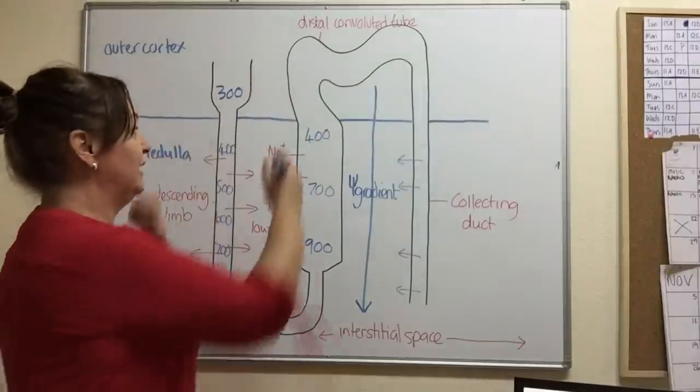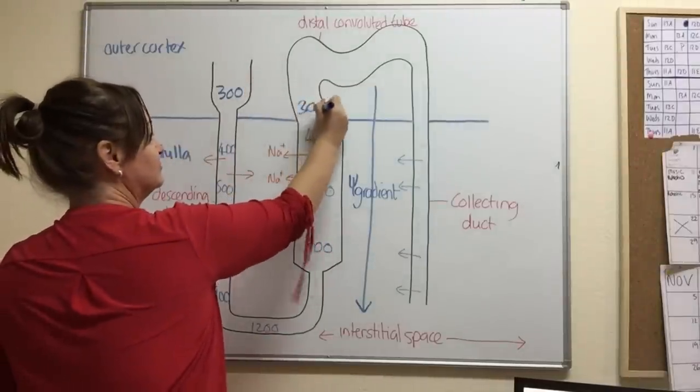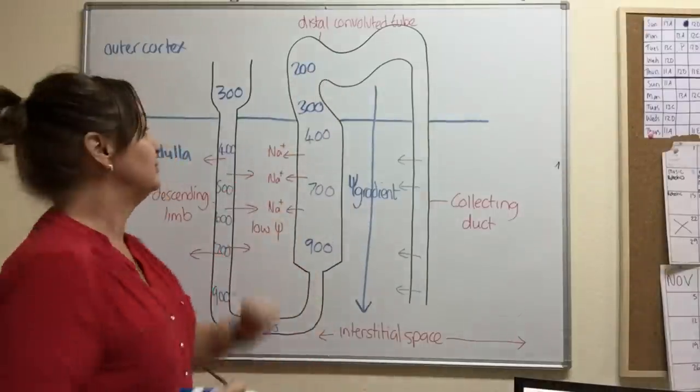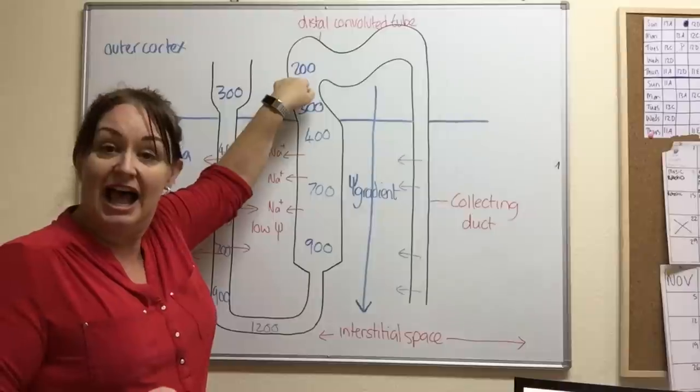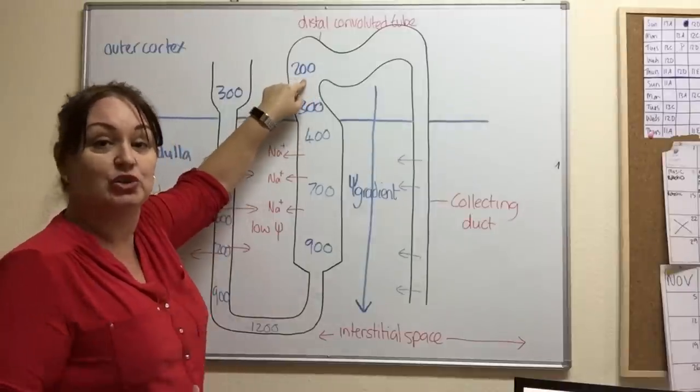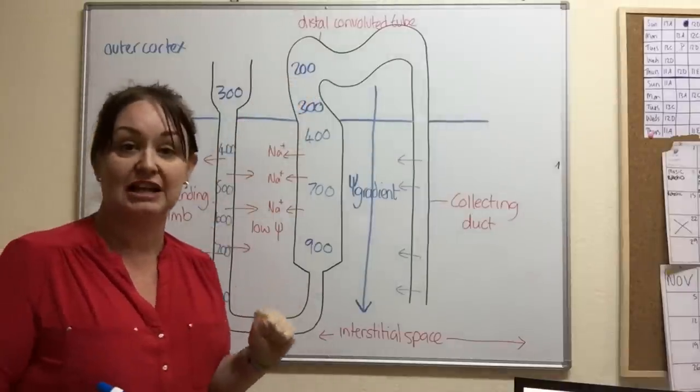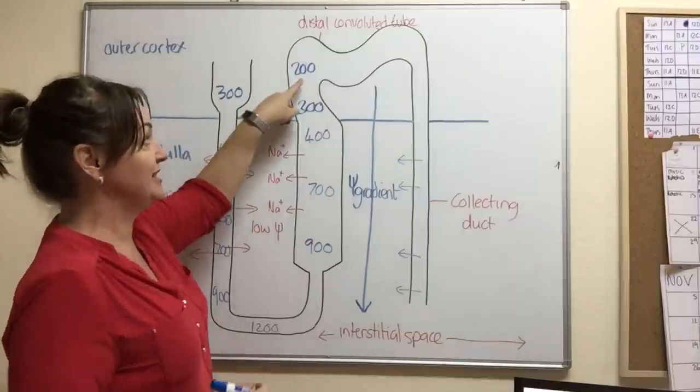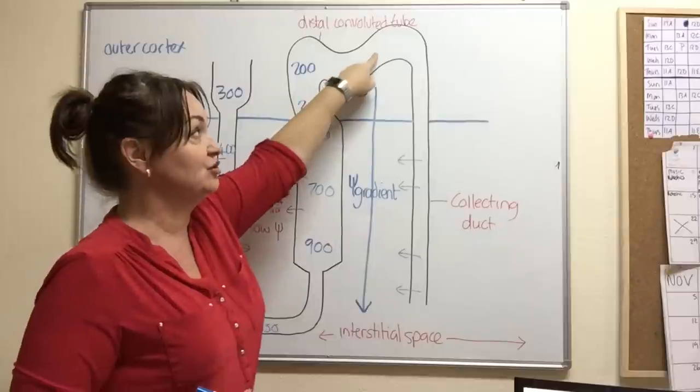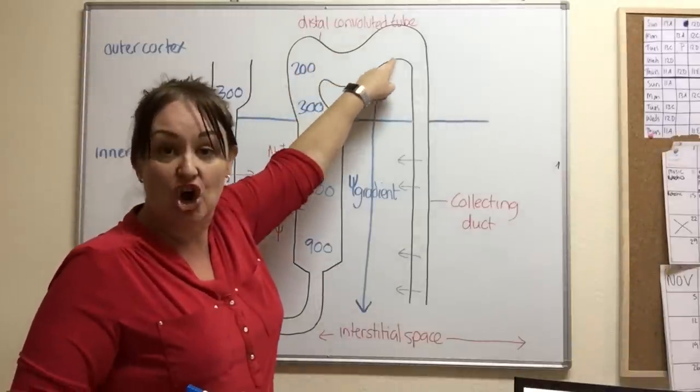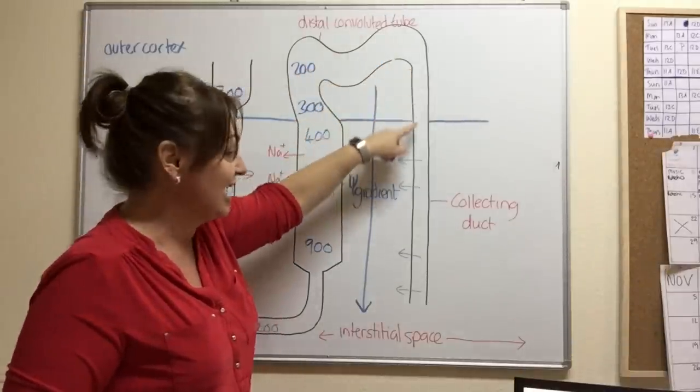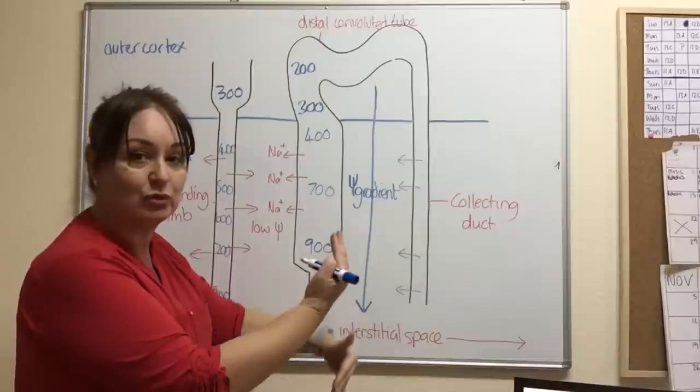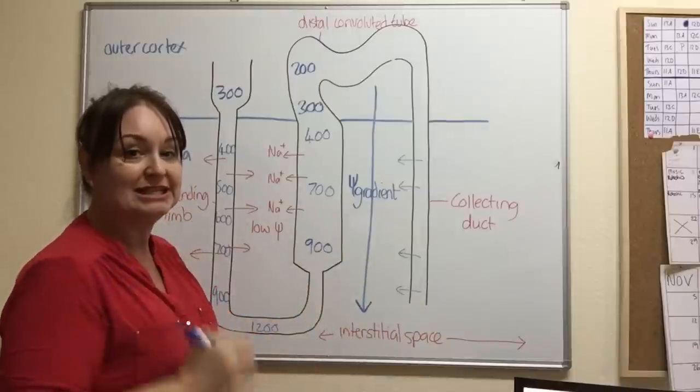So when you get to here, you may think, job done, that basically we've got a nice solution there, we've reabsorbed a lot of water. However, we can do better than that. And the reason we can do better than that is because as this filtrate now moves through this distal convoluted tubule and down the collecting duct, we have this counter current system taking place.